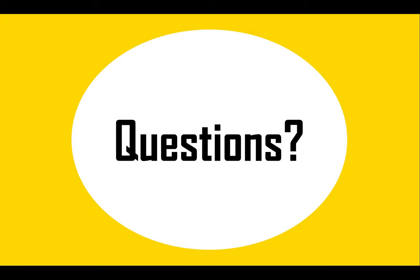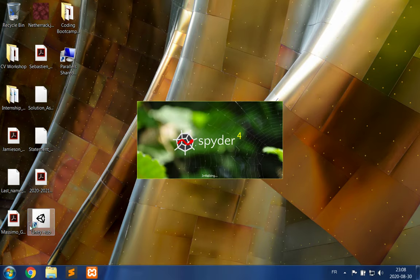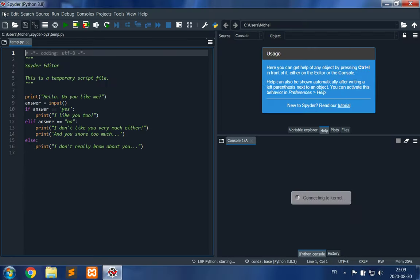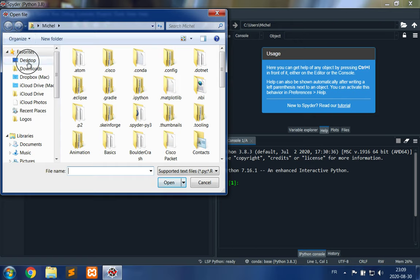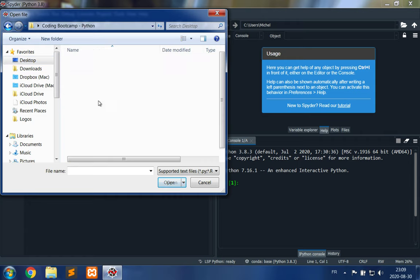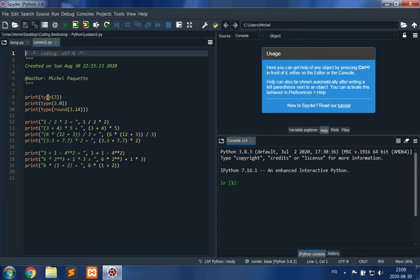To open a Python file, you can simply open your Spyder IDE, then click the opening folder to open a file. In my case, I want to open a file on my desktop in my Coding Bootcamp folder—lesson 2.py. I have three print statements.